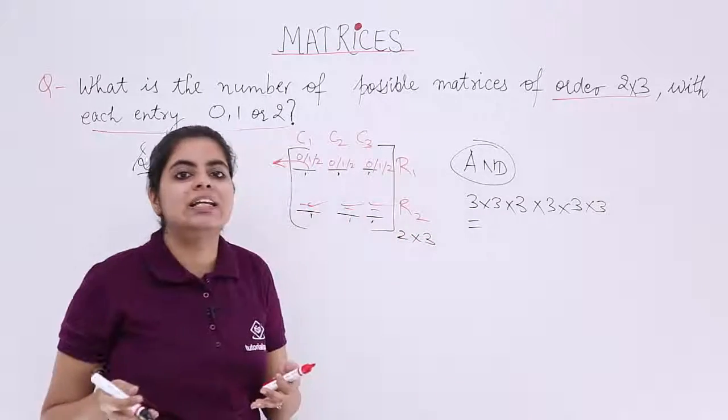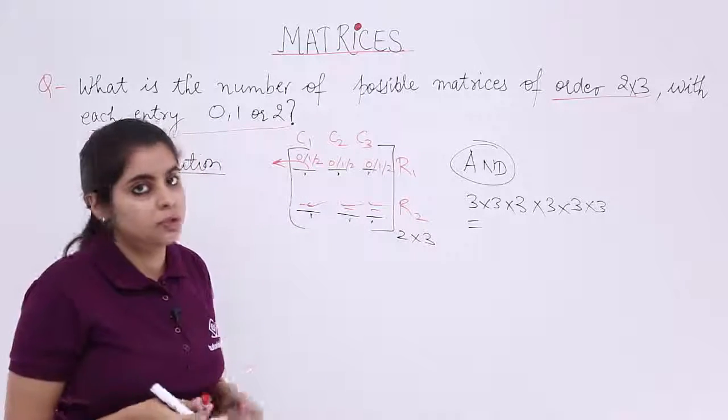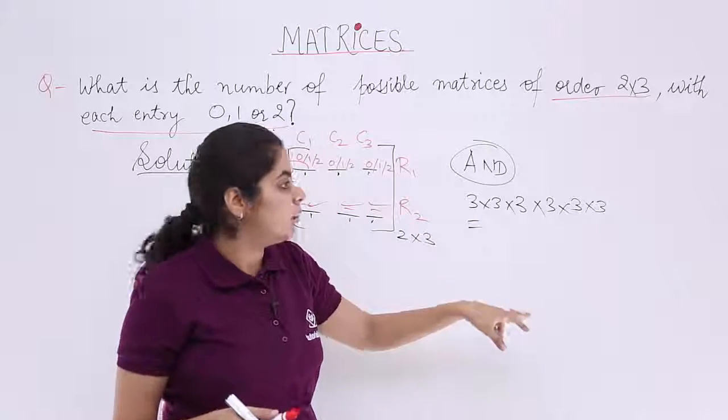And position number 6, which is the last one into consideration, also has 3 possibilities. Any of these numbers 0, 1, 2 can be here. So now since it is AND, we use multiplication. Let's multiply.